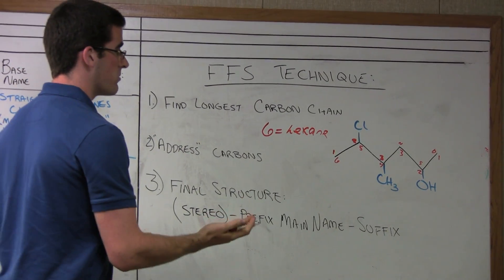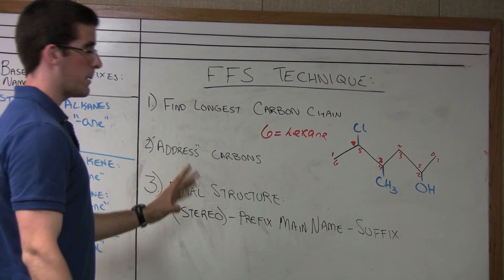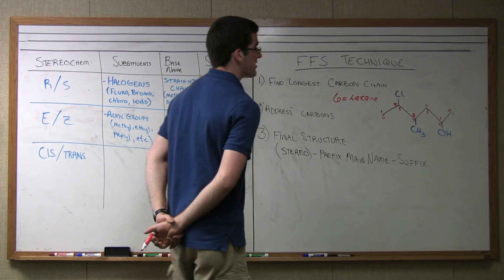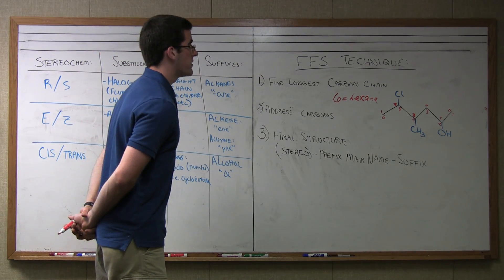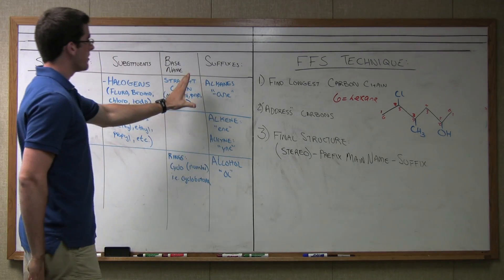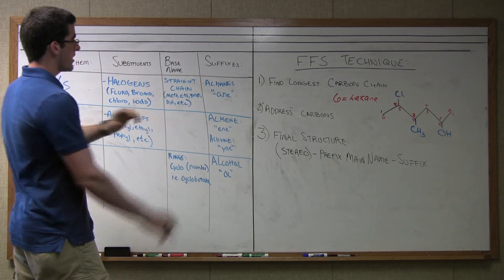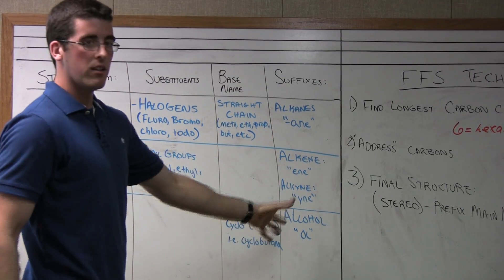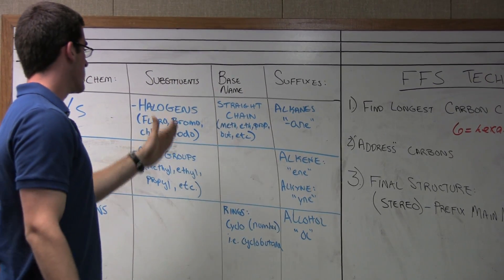So which one do we do? Well, we look at the substituents, and we follow the rule that the higher priority substituent gets the lower number. According to IUPAC guidelines, the highest priority takes precedence over other hypothetical priorities. We have substituents and suffixes here. Things like alkanes or things with double bonds, triple bonds, or alcohols take higher priority over substituents like halogens and alkyl groups.